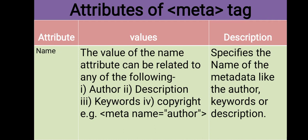For example, meta name equals author specifies the name of the metadata. So we have: meta name equals author, meta name equals description, meta name equals keywords, and meta name equals copyright. This attribute can be used to search for information like author, keywords, and copyrights through a search engine.